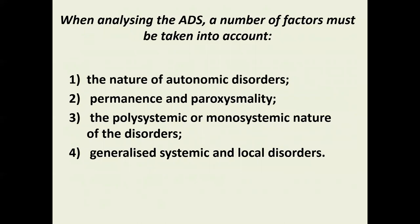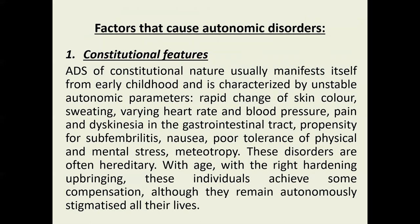When analyzing autonomic disorder syndrome, a number of factors must be taken into account: the nature of the autonomic disorders — whether they are permanent or paroxysmal — the polysystemic or monosystemic nature, and whether disorders are generalized, systemic, or local. Factors that cause autonomic disorders can be divided into groups, the most common being constitutional features. Constitutional autonomic disorder syndrome usually manifests from early childhood and is characterized by unstable autonomic parameters.